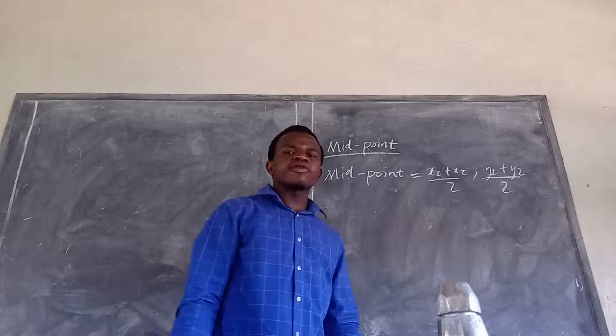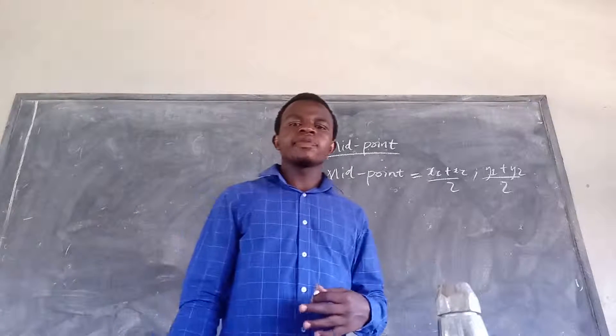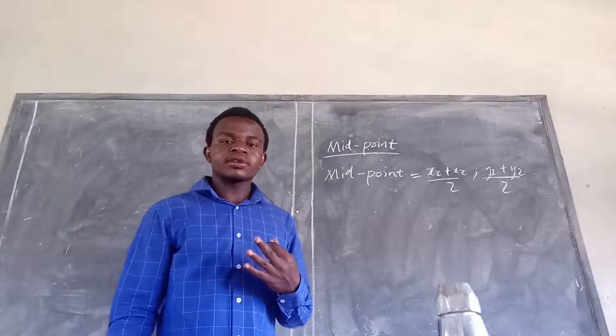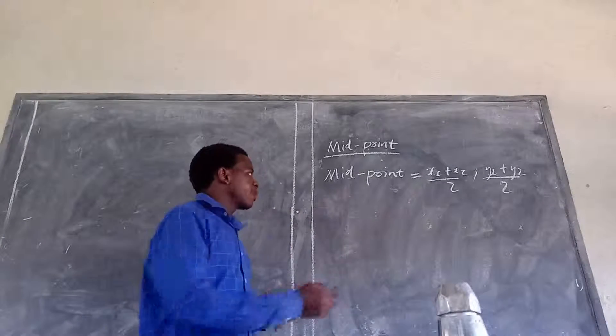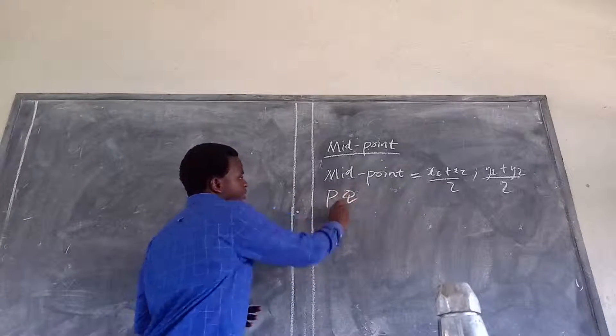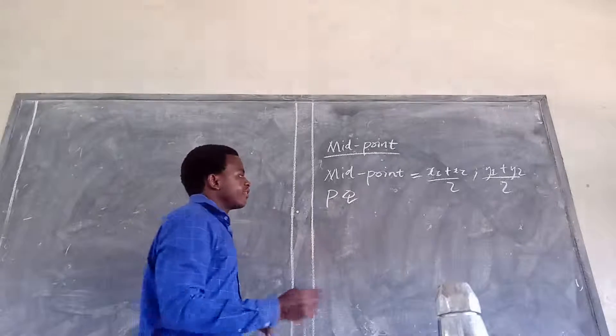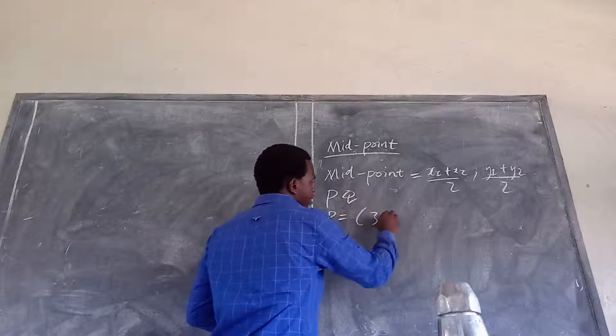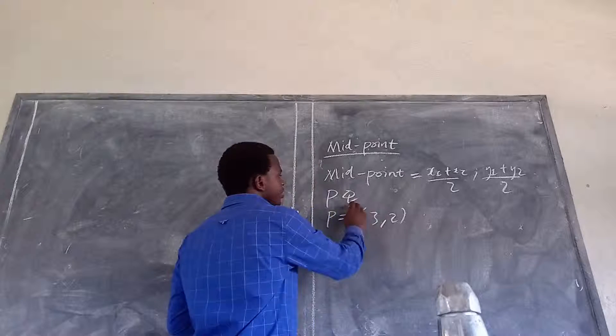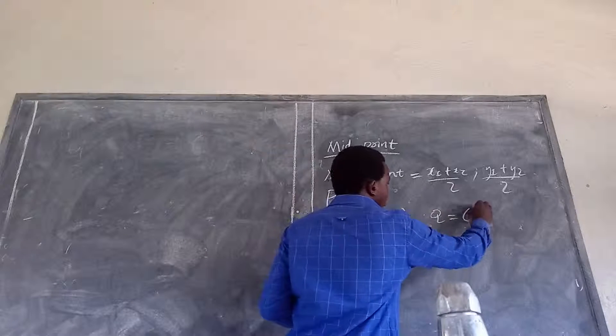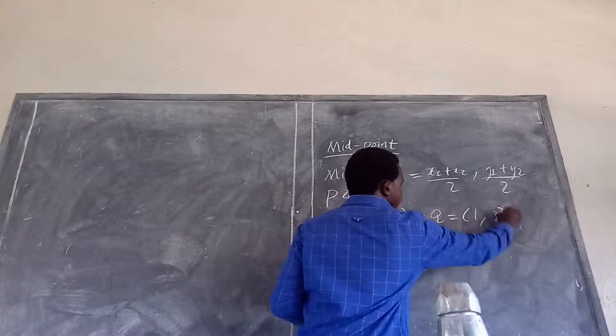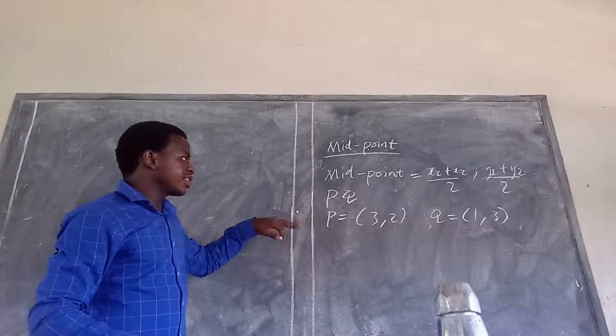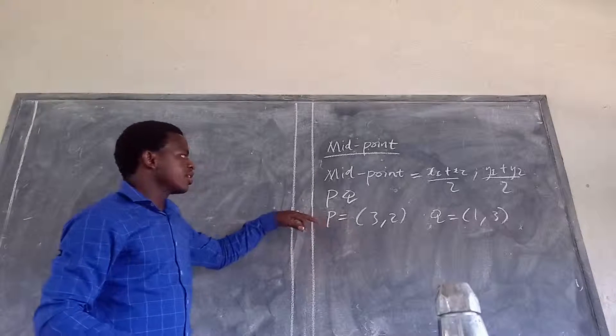So I will give an example. If, for example, you are told to calculate the midpoint of the straight line PQ, and you have been given the coordinates of P and the coordinates of Q, which is at 1 comma 3. If you have been given this question and you have been told to calculate the midpoint of PQ,